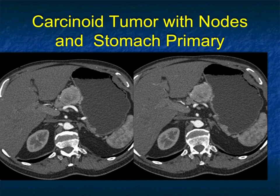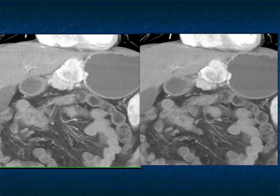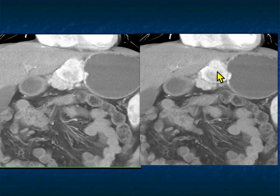Another case. At first glance it looks like a pancreatic mass, but there's a large peripancreatic mass which is actually enlarged nodes. When you look more carefully at the stomach, you can see the patient has a lesion in the gastric wall, particularly nicely shown on the arterial phase. This was the primary tumor — a gastric carcinoid — and these were metastatic nodes. It's impressive how large the nodes are compared to how small the primary tumor is.